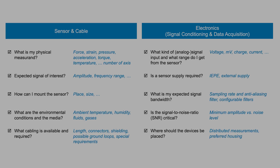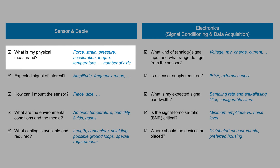Now to the promised checklist. Let's start with sensors and cables. The physical measurement is given in most cases — nevertheless, it's worth thinking about: what insights do I want to get with my measurement, and what's the best way to get the required data? For most measurements, there are several sensor technologies available, each with different advantages or disadvantages depending on the application.